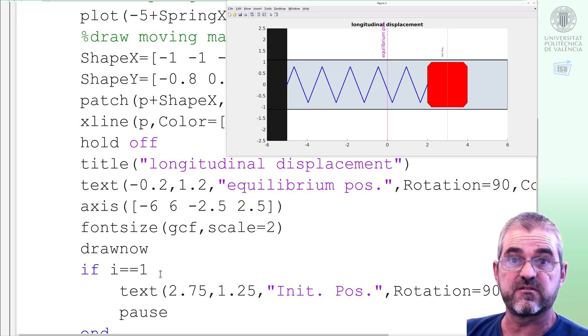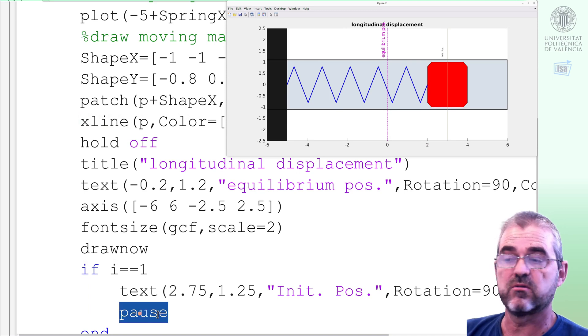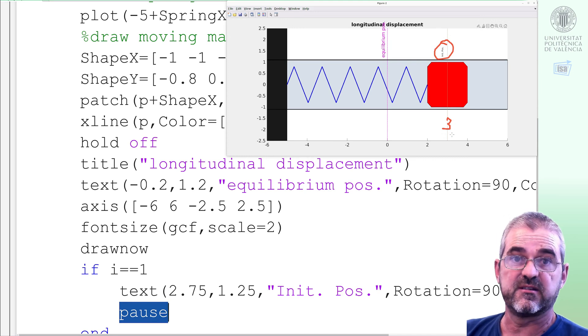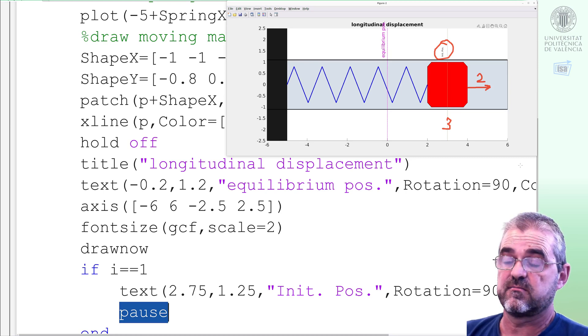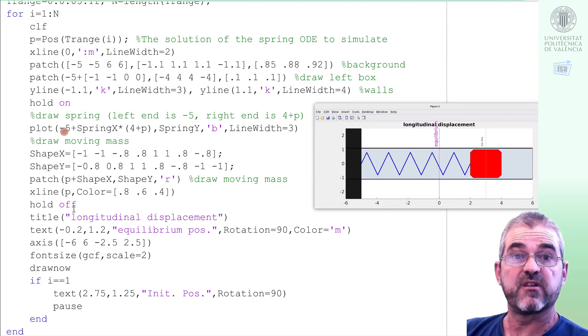And in the first frame, we do pause to freeze this thing at the initial position, which is, of course, 3, because we solved the differential equations explicitly requiring that. Of course, initial velocity will be 2 m/s to the right. Then we ended the explanation of the whole simulation loop you can see here.